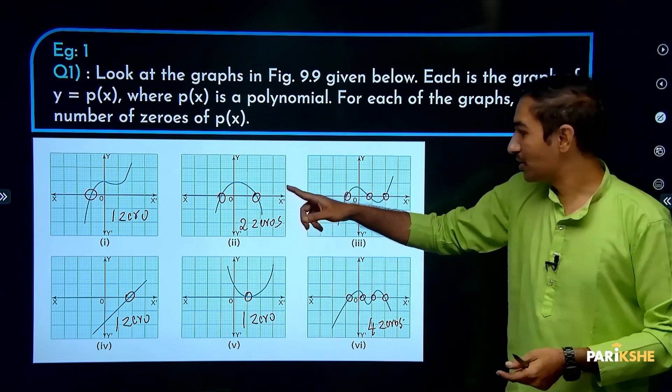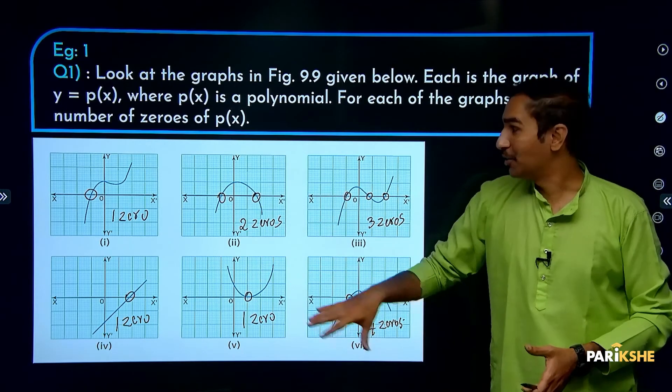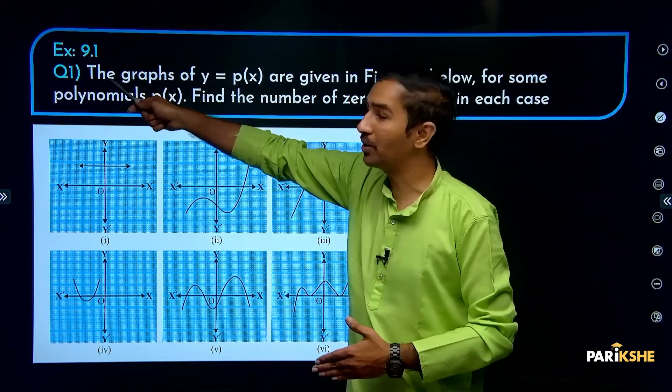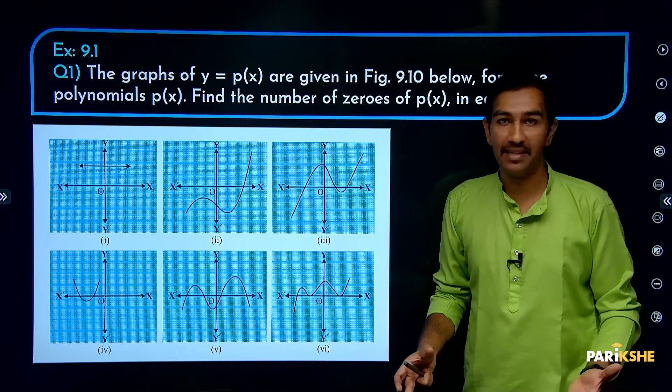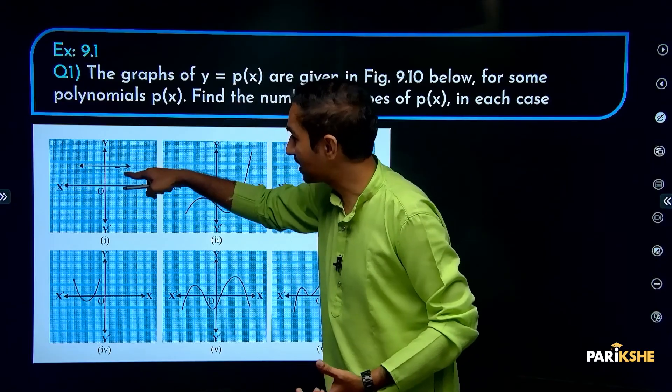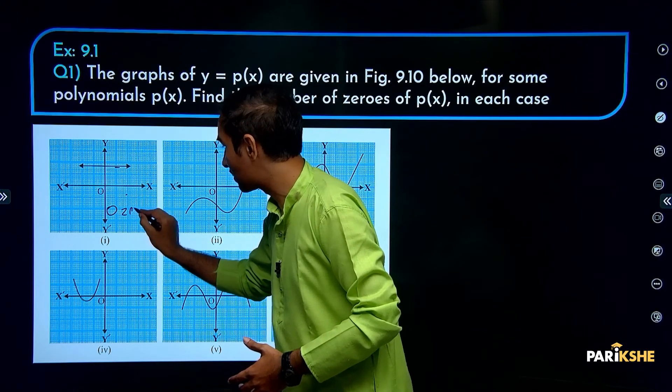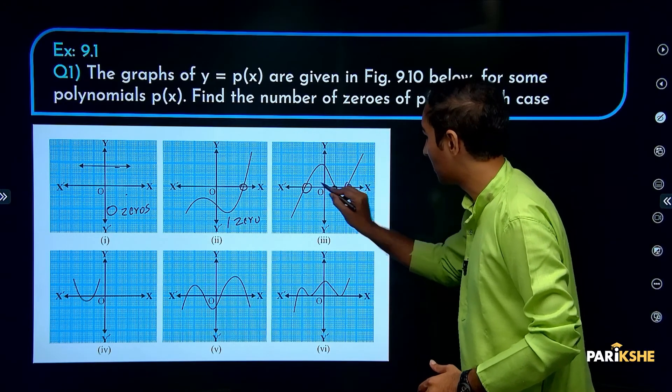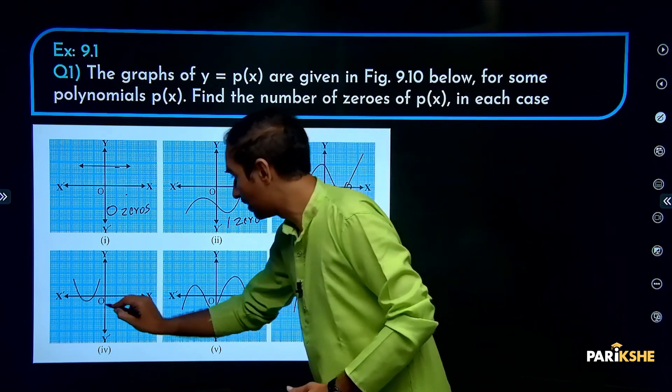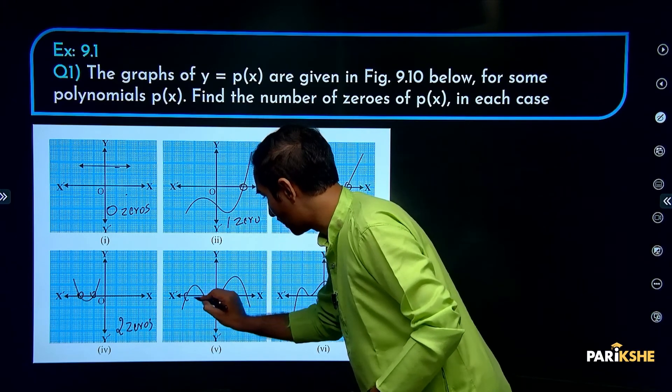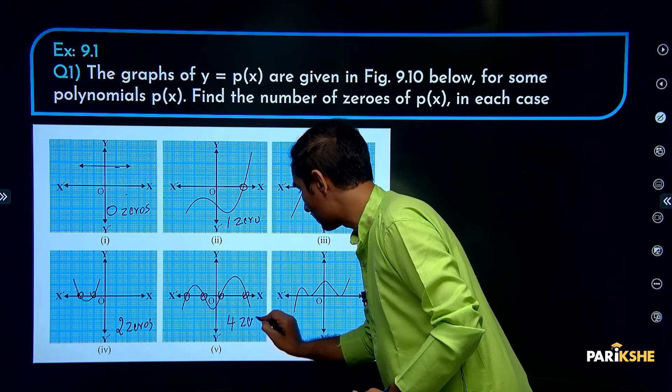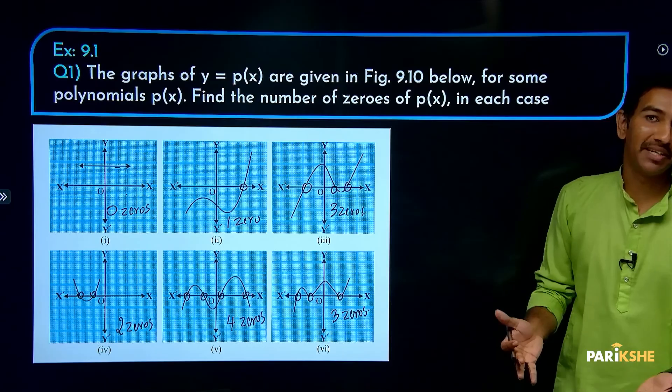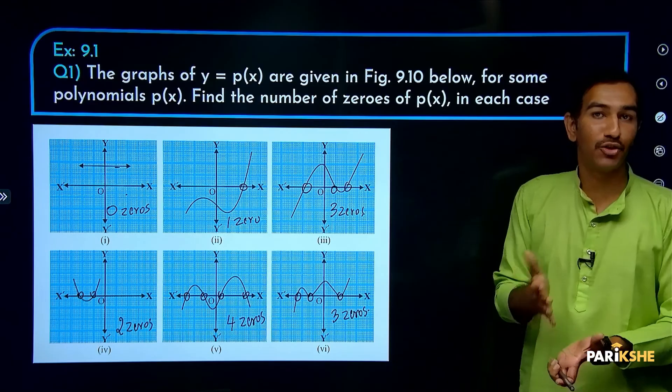Continuing with exercise 9.1 question 1. First graph: doesn't touch the x-axis, so 0 zeros. Second: touches once, 1 zero. Third: touches at 3 points, so 3 zeros. Fourth: 2 zeros. Fifth: 4 zeros. Sixth: 3 zeros. This is the geometrical meaning of zeros: the number of points where the graph touches the x-axis equals the number of zeros.